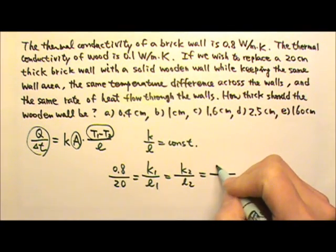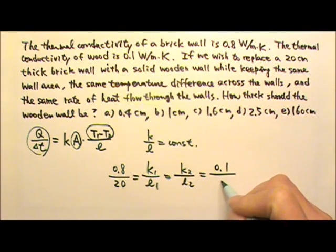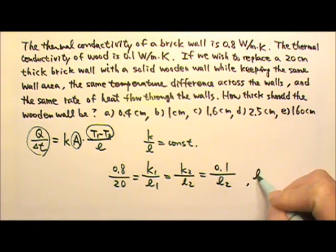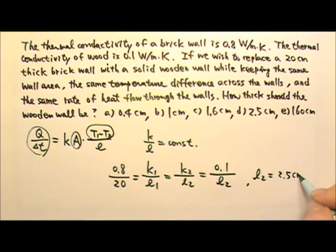The wood has a K that's 0.1, and how thick do we need the wall to be? You will find the L2 to be 2.5 centimeters. It's centimeters because we use the centimeters for L1, so when we find L2 that also has to be in centimeters. So the answer is D.